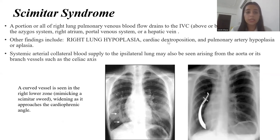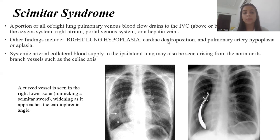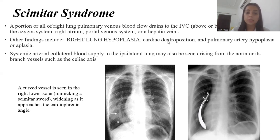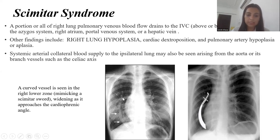Now discussing scimitar syndrome: in this, a portion or all of the right lung pulmonary venous blood flows into the IVC, azygous system, right atrium, portal venous system, or hepatic vein. Other findings include right lung hypoplasia, which is a cardinal feature of scimitar syndrome. Other findings are cardiac dextroposition, pulmonary artery hypoplasia or atresia. Systemic arterial collateral blood supply to the ipsilateral lung may also be seen, arising from the aorta or its branch vessels such as the celiac axis. A curved vessel is seen in the right lower zone mimicking the scimitar sword, hence the name.